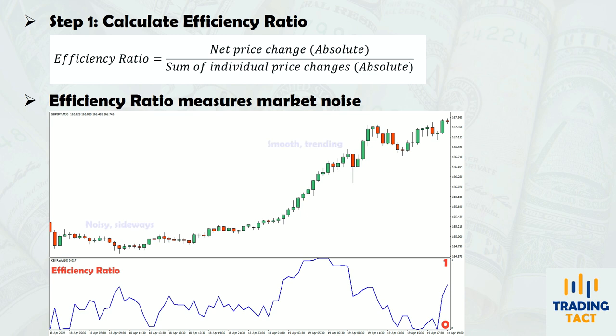Smooth trending markets have high efficiency ratios, while noisy sideways markets have low ratios. The efficiency ratio's variation in accordance with the market noise is the reason for the KAMA's adaptive nature. To allow the KAMA to adapt quickly to changing markets, Kaufman recommended using a smaller look-back period for the ratio. A 10-period look-back is used by default.